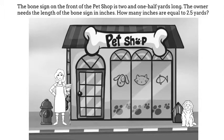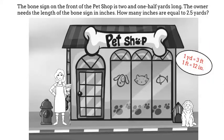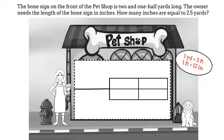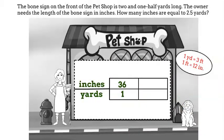I have one more measurement problem to convert before the day is over. The bone sign on the front of the pet shop is 2 and a half yards long. The owner needs the length of the bone sign in inches. How many inches are equal to 2 and a half yards? Remember, 1 yard equals 3 feet and 1 foot equals 12 inches. Since 12 times 3 is 36, that means 1 yard is 36 inches. Let's set our graphic organizer up as inches to yards. Our first ratio will be 36 over 1. Since the 2.5 is yards, it will go in the denominator and x will go in the numerator.